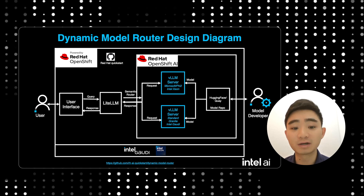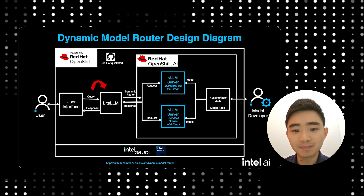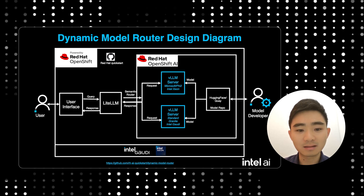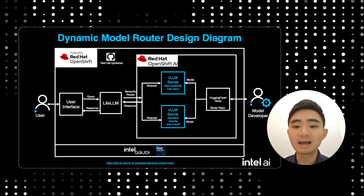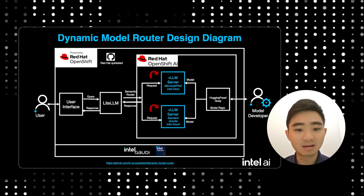Now let me show you what's happening underneath the hood. The UI is an Open Web UI where I'm able to set certain parameters and input my query. This goes into Lite LLM, which acts as a proxy between the UI and VLM pods to have the models deployed. My query goes through a semantic router and then it goes into one of either the VLM server on Intel Gaudi, which has a standard Granite model, or a VLM server on Xeon, which has a Microsoft Phi 2 model.